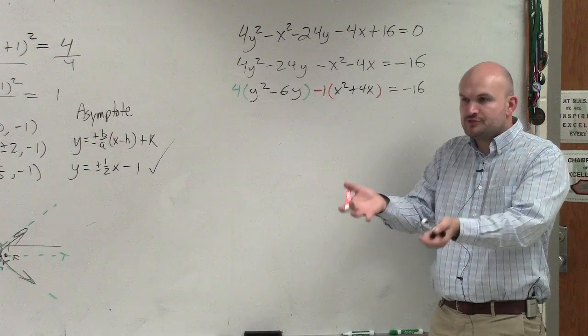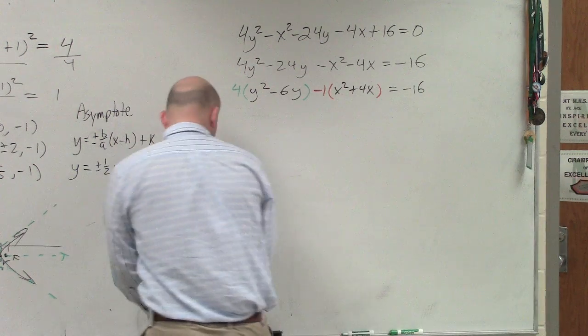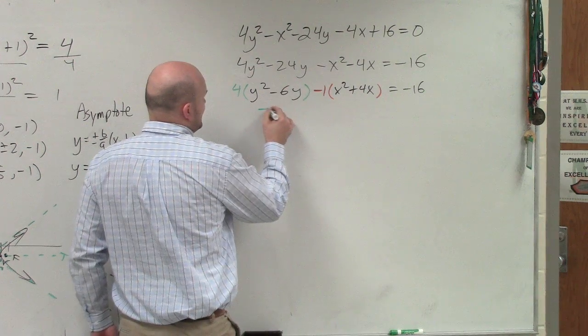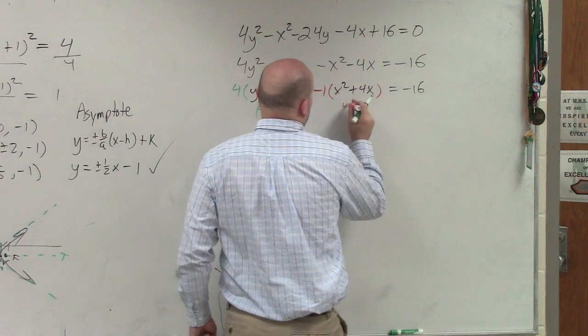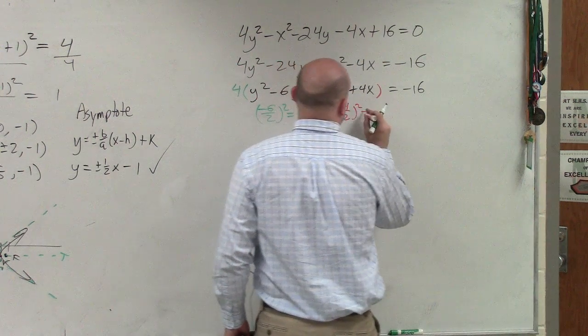So do you see how now inside the parentheses they have a coefficient of 1? Now you do the b over 2, OK? So when doing that, I'll just take -6 ÷ 2 squared, which equals 9. Over here I do 4 ÷ 2 squared, which equals 4.